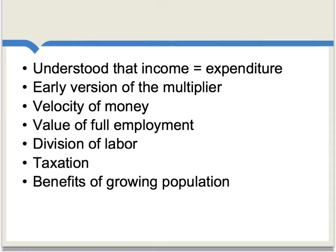Although statistics and record-keeping can be thought of as Petty's major and lasting contribution, he had a lot of other economic ideas which turned out to be important. For instance, Petty was one of the first individuals to realize that income equals expenditure in a well-specified understanding of the macroeconomy. He also had an early version of the multiplier — the idea that government expenditure can boost the economy. He had an understanding of the velocity of money, argued for the value of full employment, had good examples of division of labor (which probably influenced Adam Smith), wrote extensively on taxation and what would be fair, just, and efficient, and stressed the benefits of having a large and growing population.